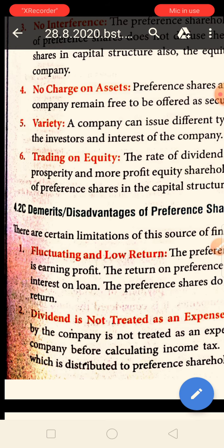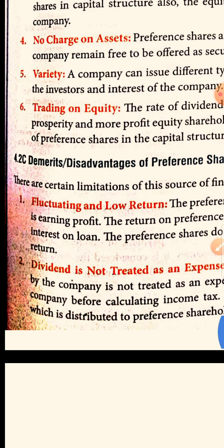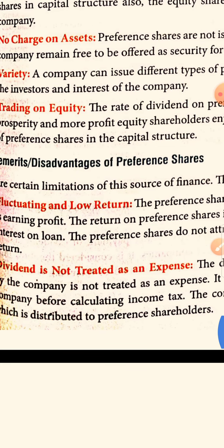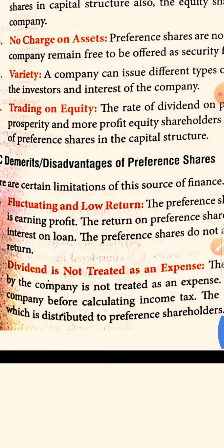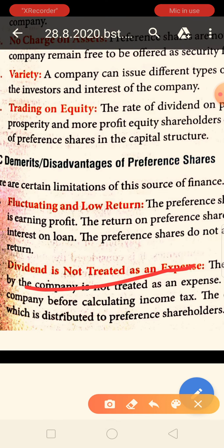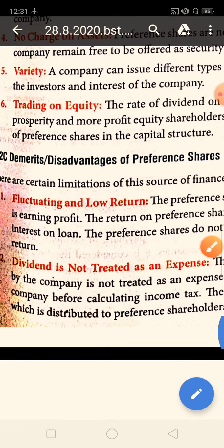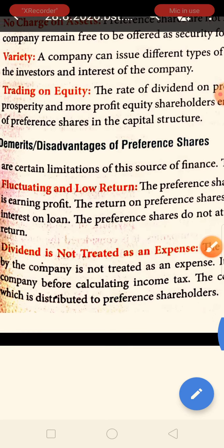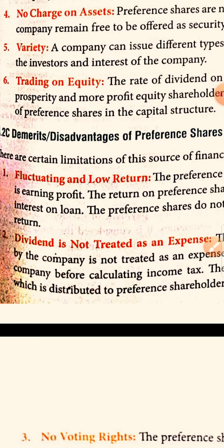The next demerit is that dividend is not treated as an expense. This is a very important and difficult point: when a company pays dividend to preference shareholders, the company cannot write it on the expenses side.